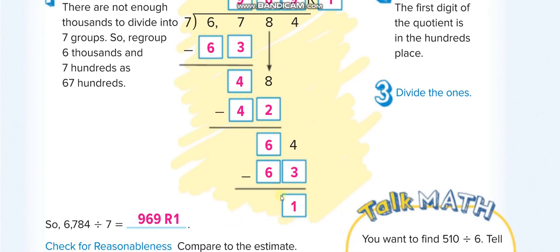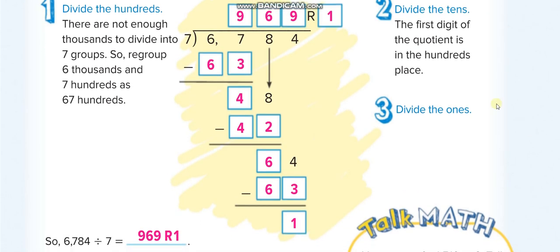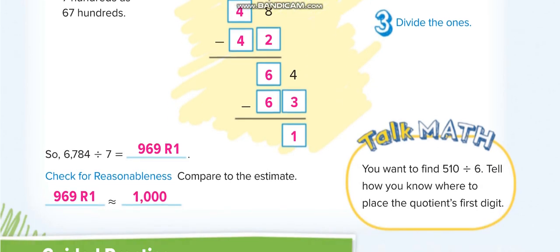Bring the 4 down. 7 times 9 is 63, and 64 minus 63 is 1. So the remainder is 1. You can see the dividend has 4 digits and the quotient is only 3 digits because the first number is less than the divisor. That's why this lesson is known as Place the First Digit.